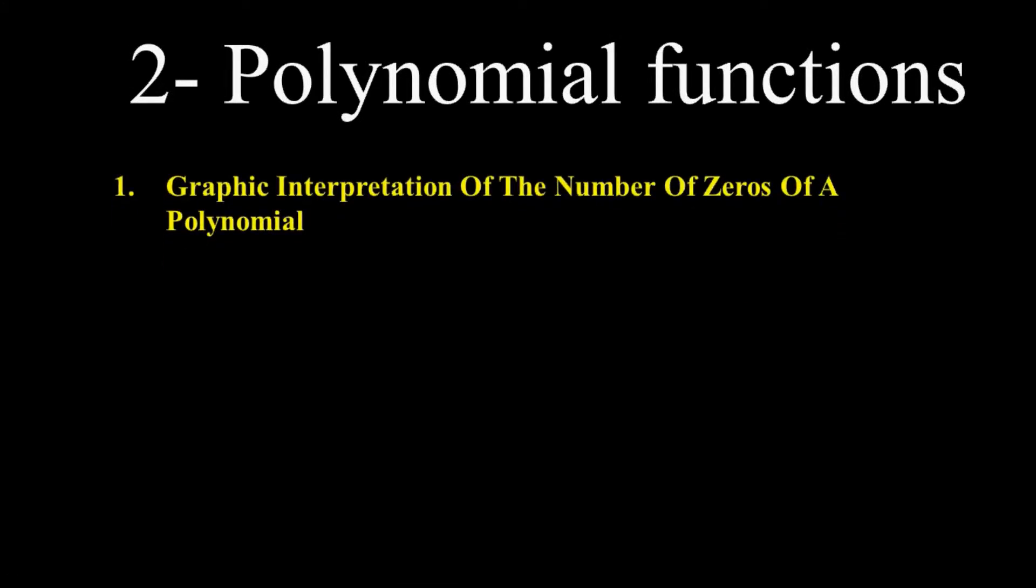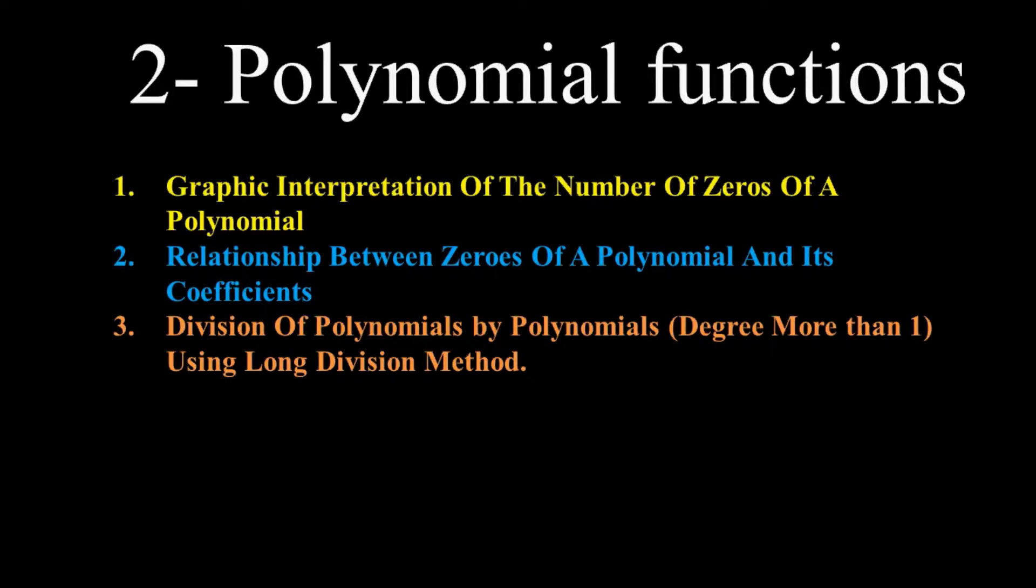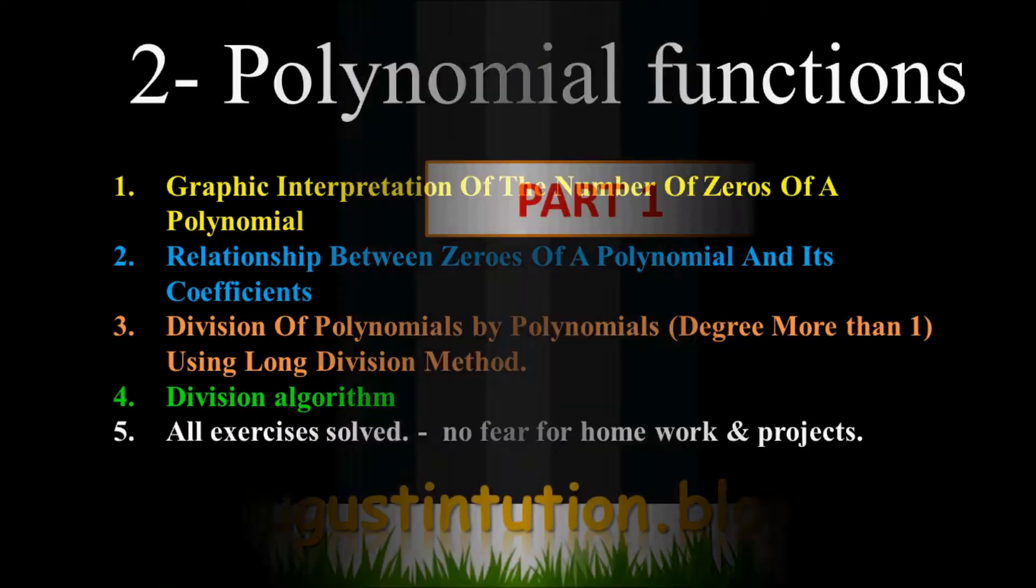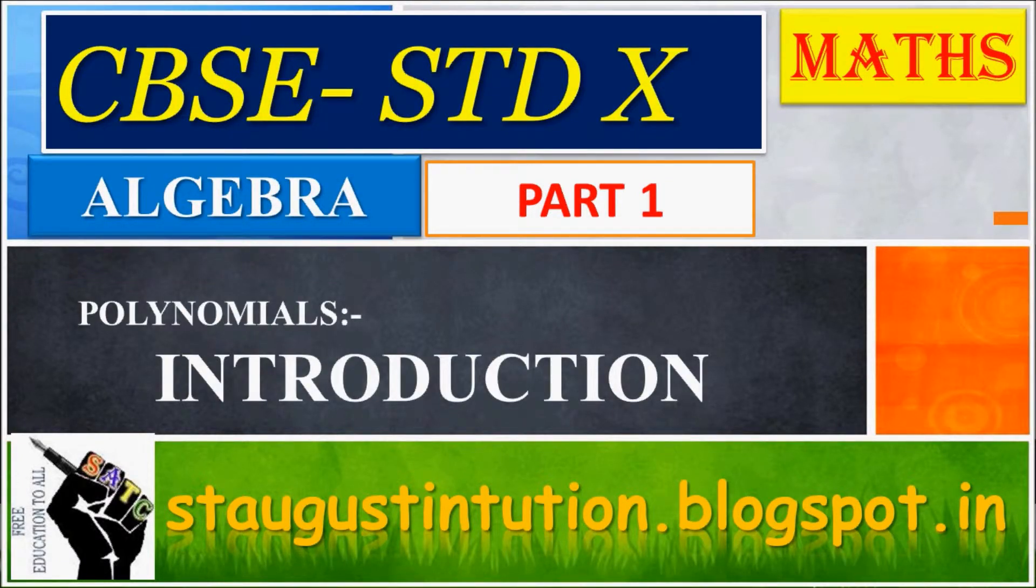The main topics are: 1. Graphic interpretation of the number of zeros of a polynomial, 2. Relationship between zeros of a polynomial and its coefficients, 3. Division of polynomials by division of all types of polynomial work and projects. There is no separate class for any topic. Part One: Polynomials introduction, what is a polynomial.